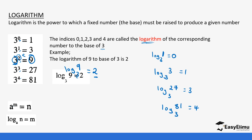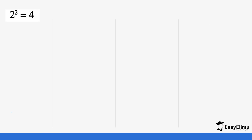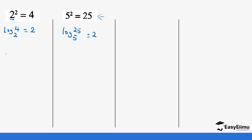The index is the answer for the logarithm, and the base is the value that is being powered. Let's do a few more examples. For 2² = 4, it would be the log of four to the base of two, and the index is the answer, which is two. Similarly, 5² = 25 means that logarithm of 25 to the base of five equals two, because the square of five gives 25. We write this as log base 5 of 25 equals two.